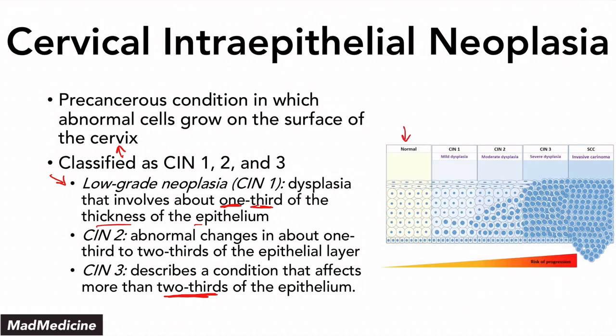As you can see here, this is the normal epithelial lining of the cervix. In CIN 1, you have mild dysplasia. In CIN 2, the dysplasia continues into almost two-thirds of the space. In CIN 3, you have a lot of dysplasia. And then, eventually, if you do not correct and manage this properly, you will get invasive carcinoma. That is an example of the whole process of dysplasia progressing to neoplasia.